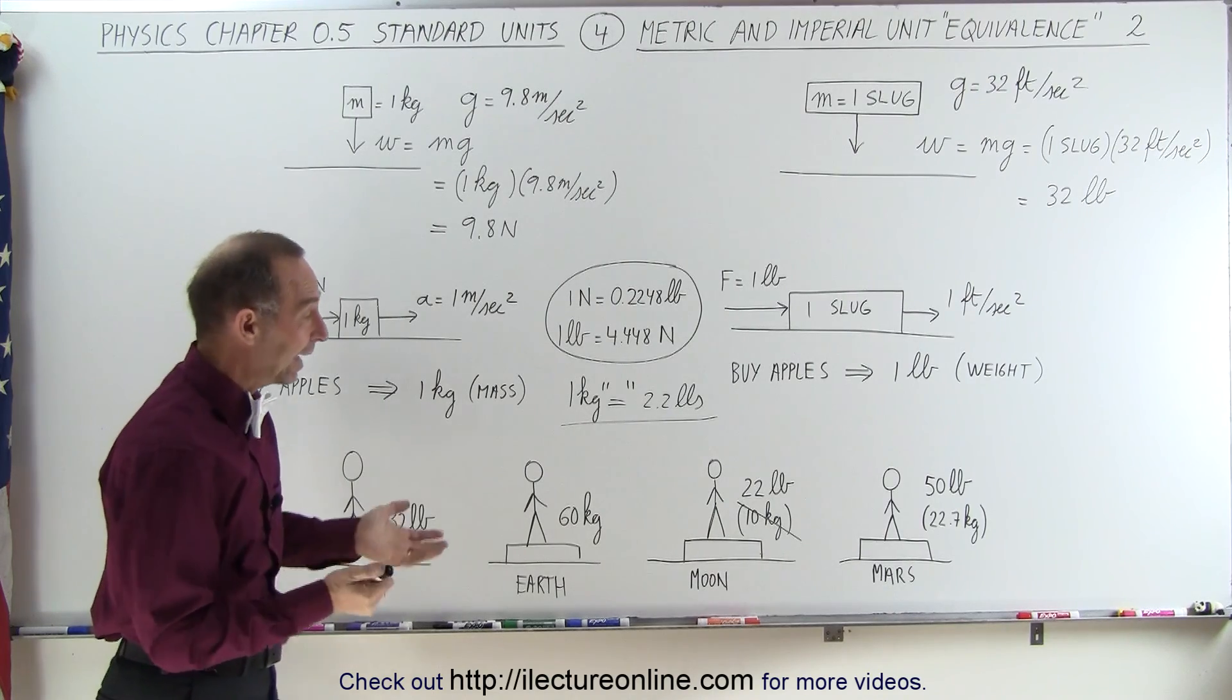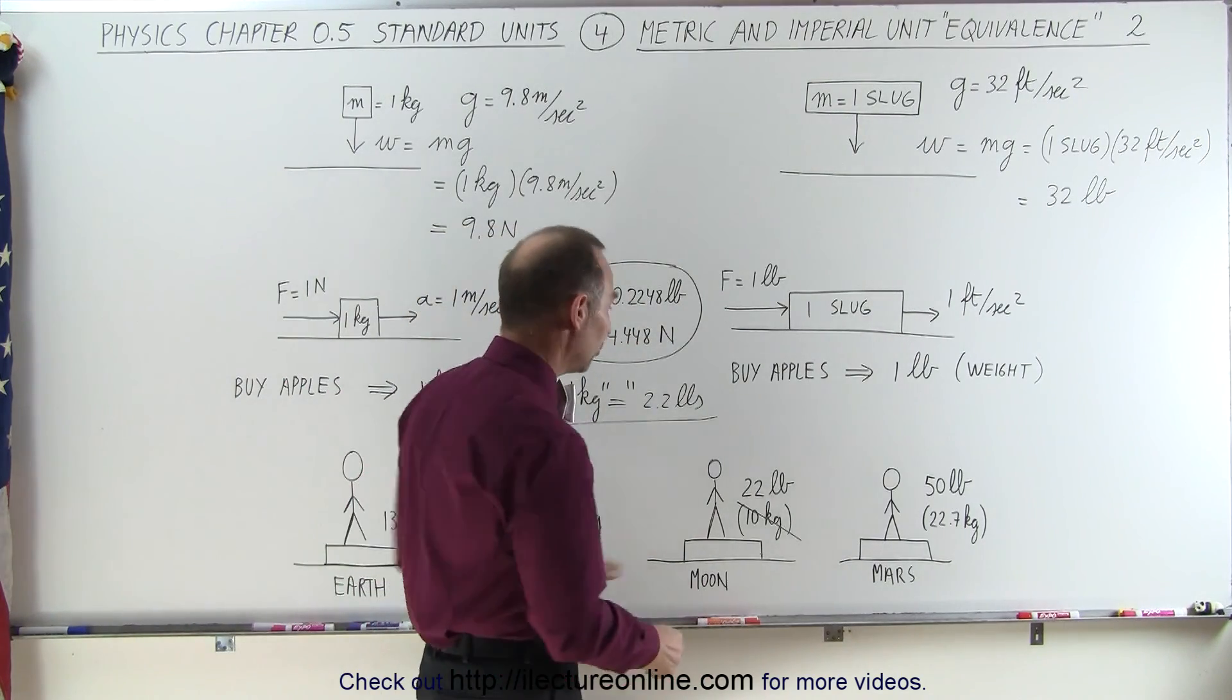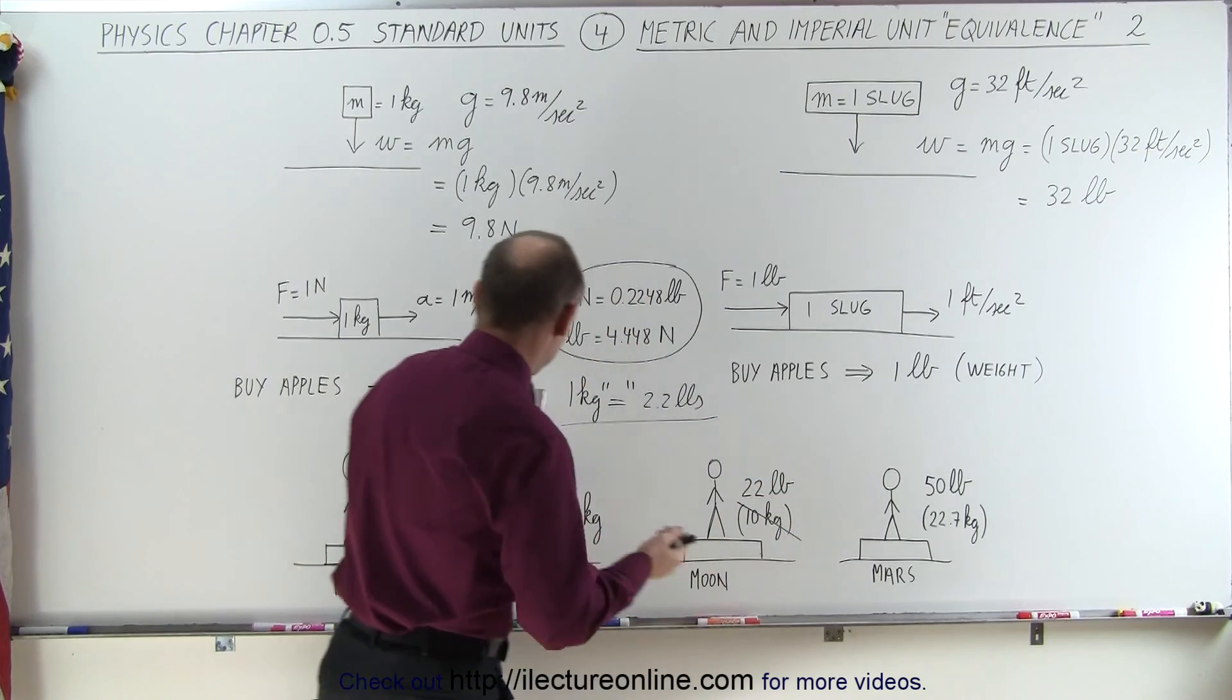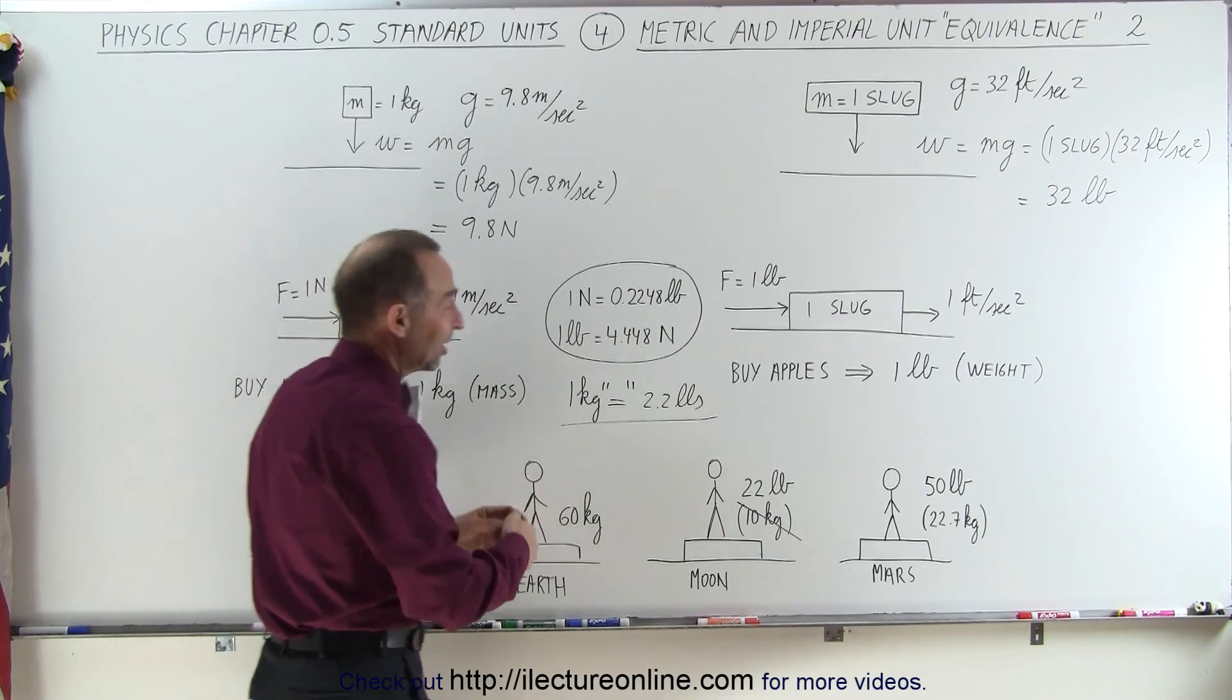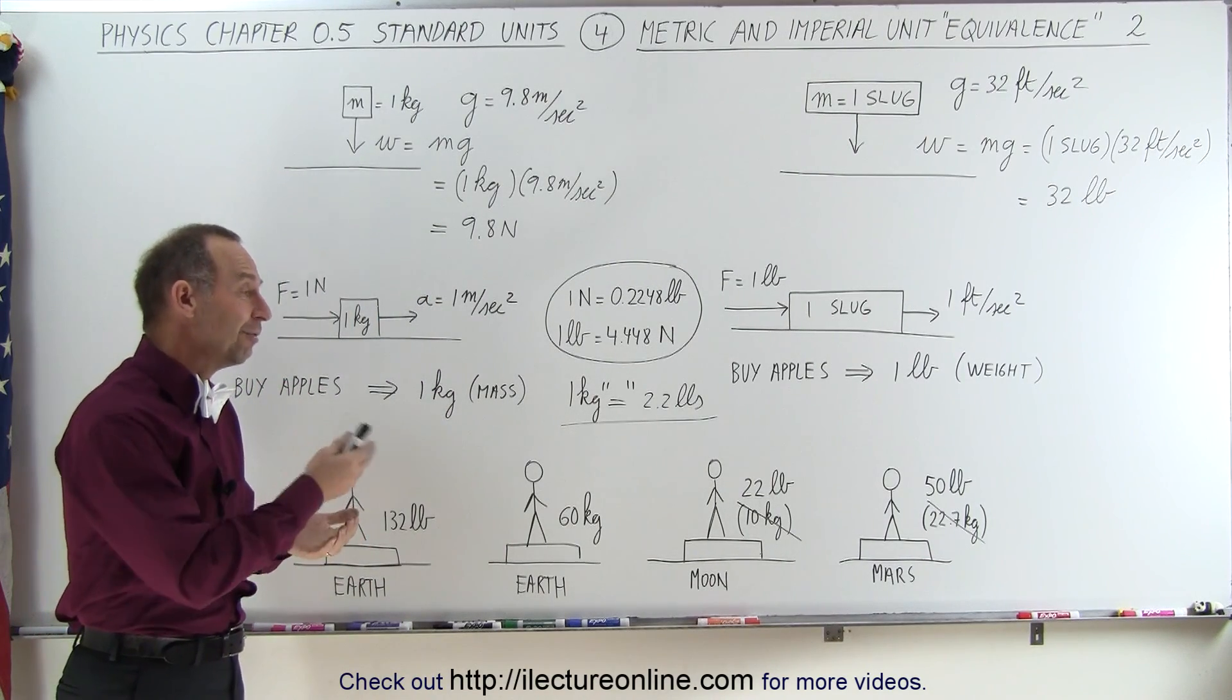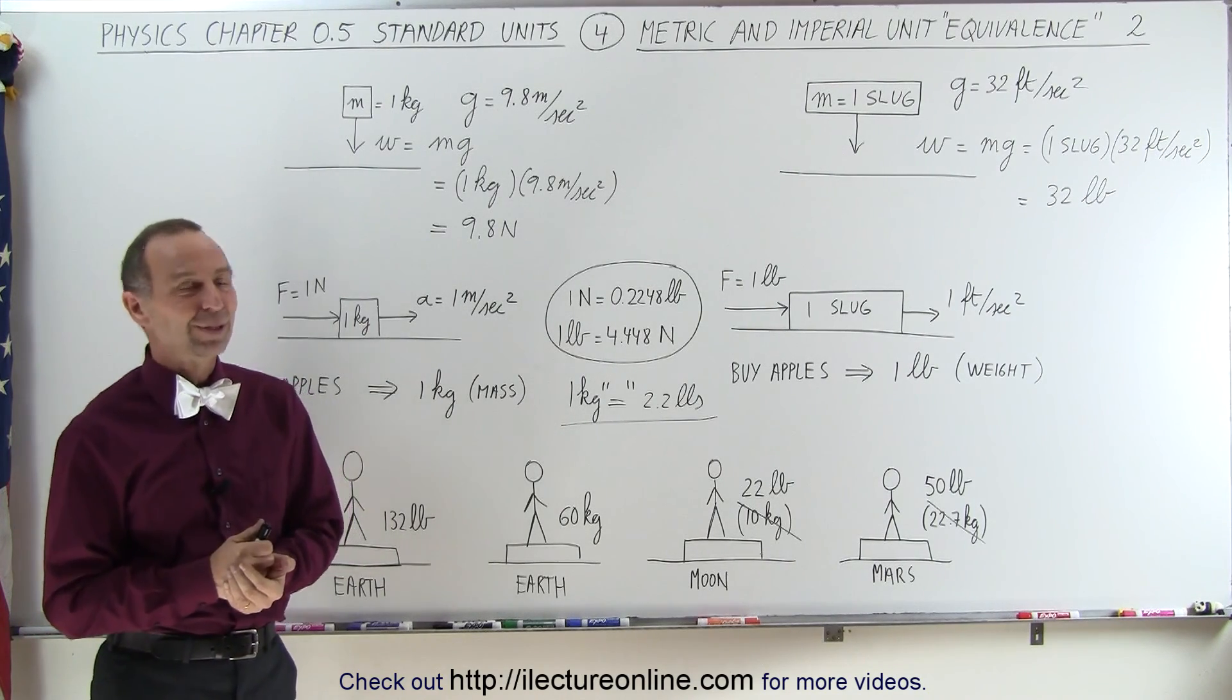And if you were to go to Mars, notice that same person that weighs 132 pounds on Earth will have a weight of 50 pounds on Mars, an equivalent mass of 22.7 kilograms. Again, your weight will not have changed. I mean, your mass will not have changed. You will still have a mass of 60 kilograms. So you will appear as if you have a mass of 22.7 kilograms. But in essence, you will weigh different but have the same mass. Strange enough, but that's how you compare the metric system to the imperial system.